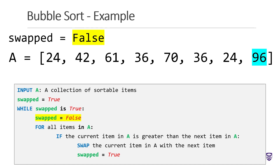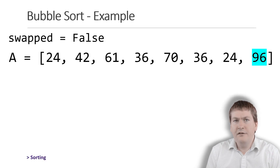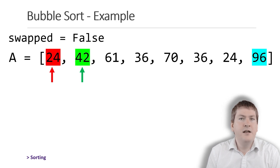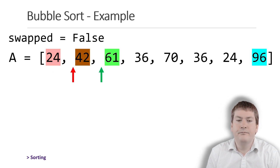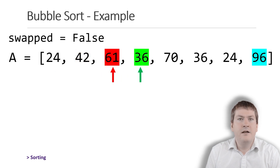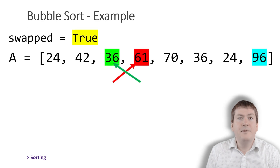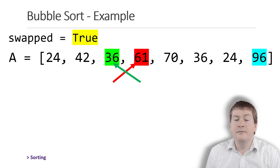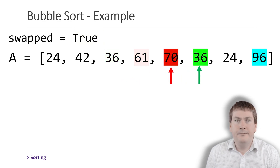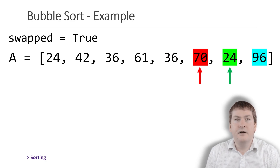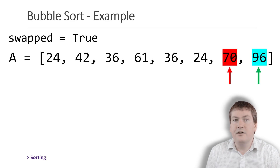So we set swapped back to false and get started on running the loop through the list again. Since we've been through this process one time before, we'll go through the steps a bit faster. We start by comparing the first and second items — 24 is not larger than 42, so we move on. The next comparison is also not larger. Then we find one that is larger, so we swap the values and update swapped to true, meaning we'll have to run this loop at least one more time. We continue — not larger, then larger, swap; 70 is larger, swap. The 96 is already in the correct location, so no swap is needed there.